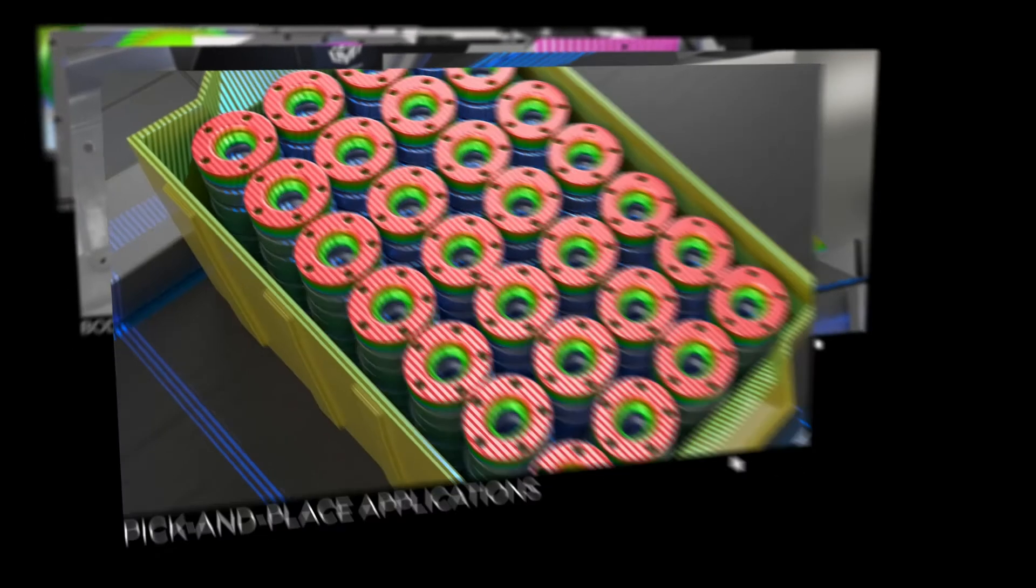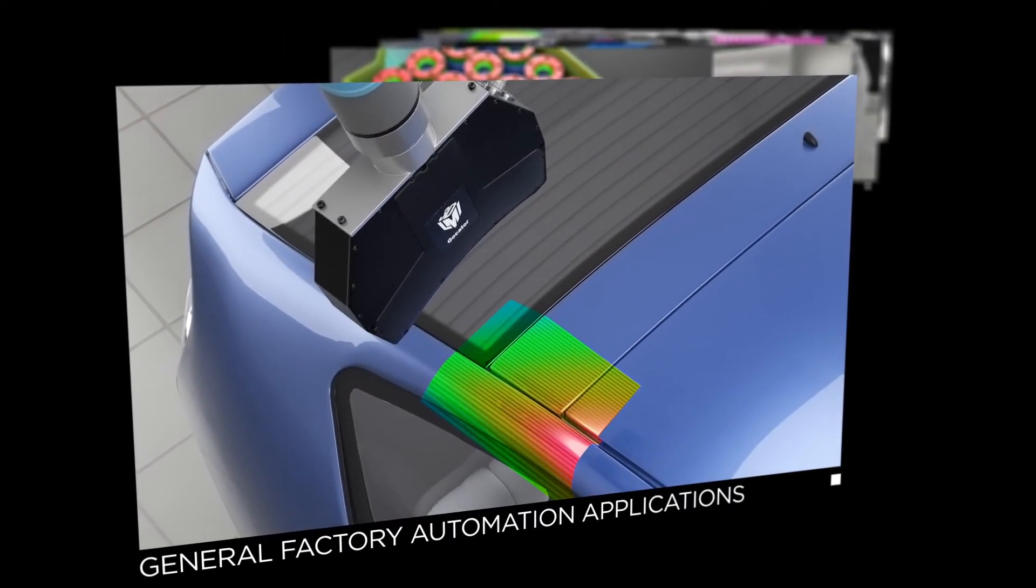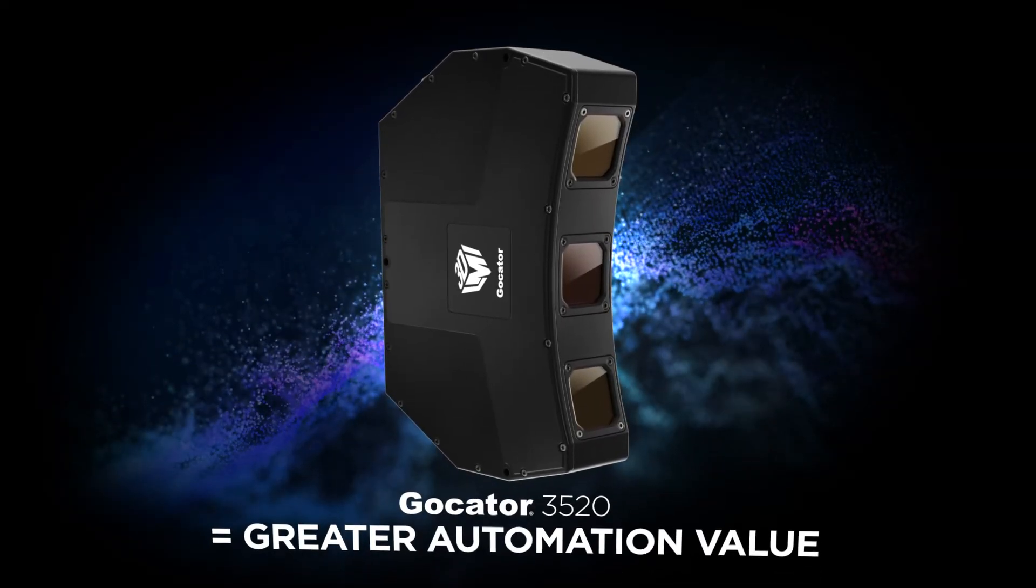GoCater 3520 snapshot sensors are also suited for general factory automation applications where smart 3D robot vision delivers greater automation value.